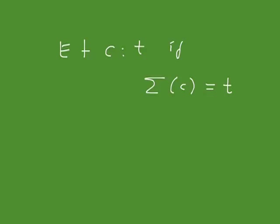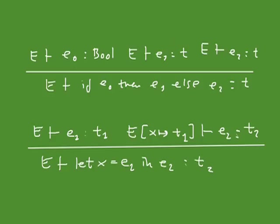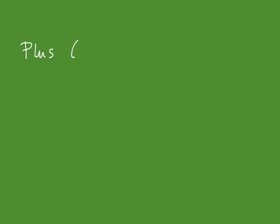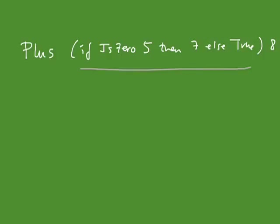You might wonder why the rules look the way they do — in particular the if rule. Why do you require the branches to have the same type? Consider an example: if 5 is not zero, then 7 else true. Since 5 is not zero, this sub-expression would evaluate to true, but then plus applied to true is not well-defined. That's the reason why you want the branches to have the same type — otherwise the evaluation would not be safe.